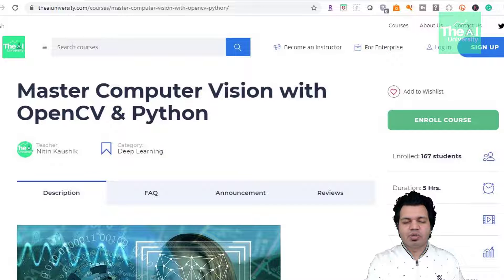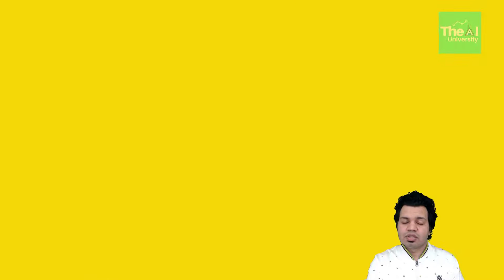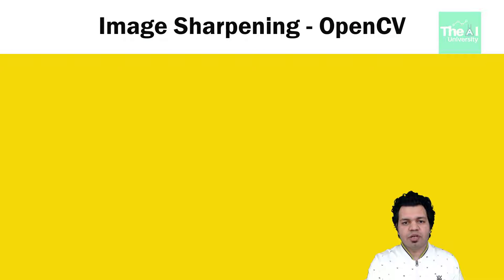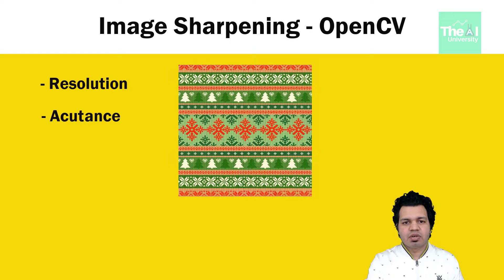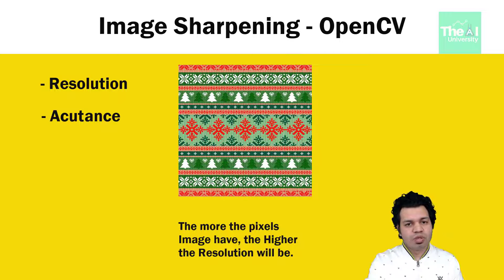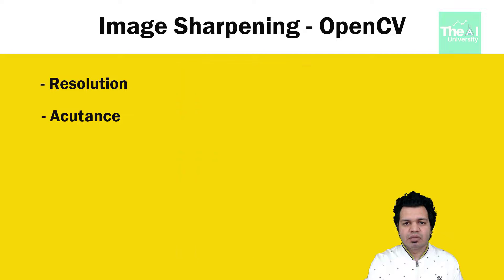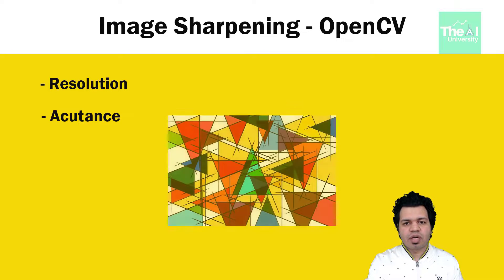Let's get started. Sharpness, which is the reverse process of image blurring, is a combination of two factors: resolution and accutance. Resolution is the size in pixels of the image — the higher the resolution, the more pixels it has and the sharper it will be. Accutance measures the contrast at an edge; edges that have more contrast appear to have more defined edges to human vision.